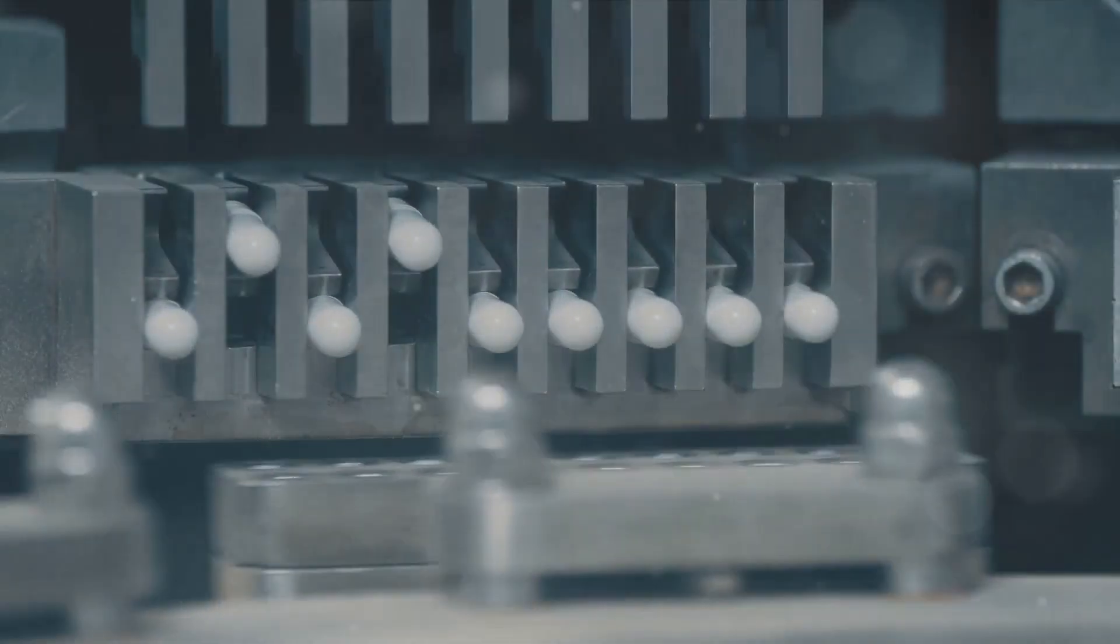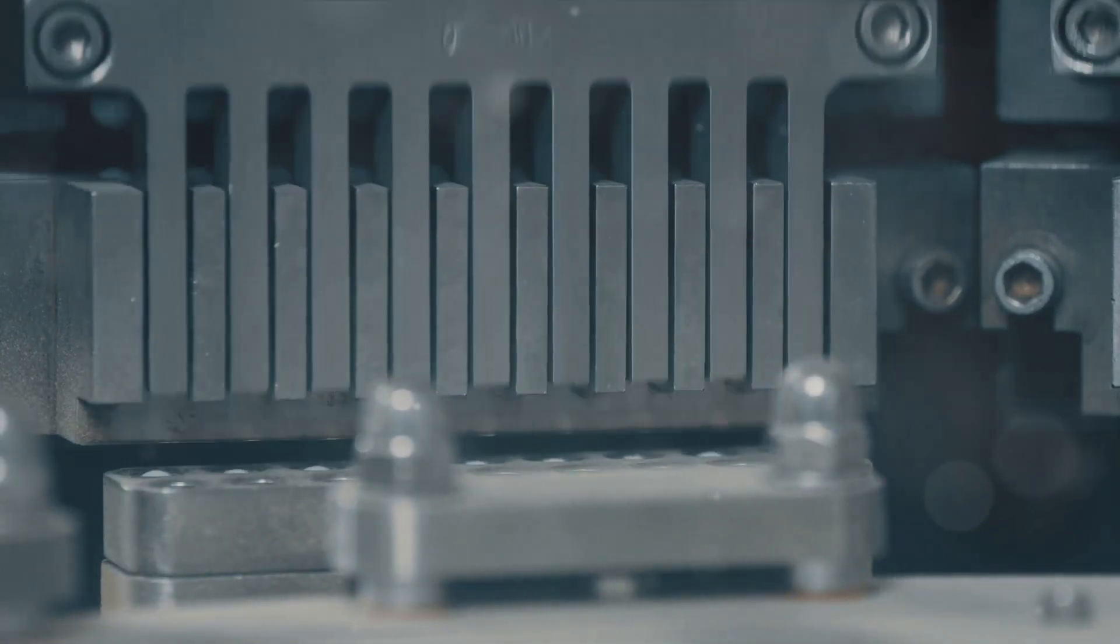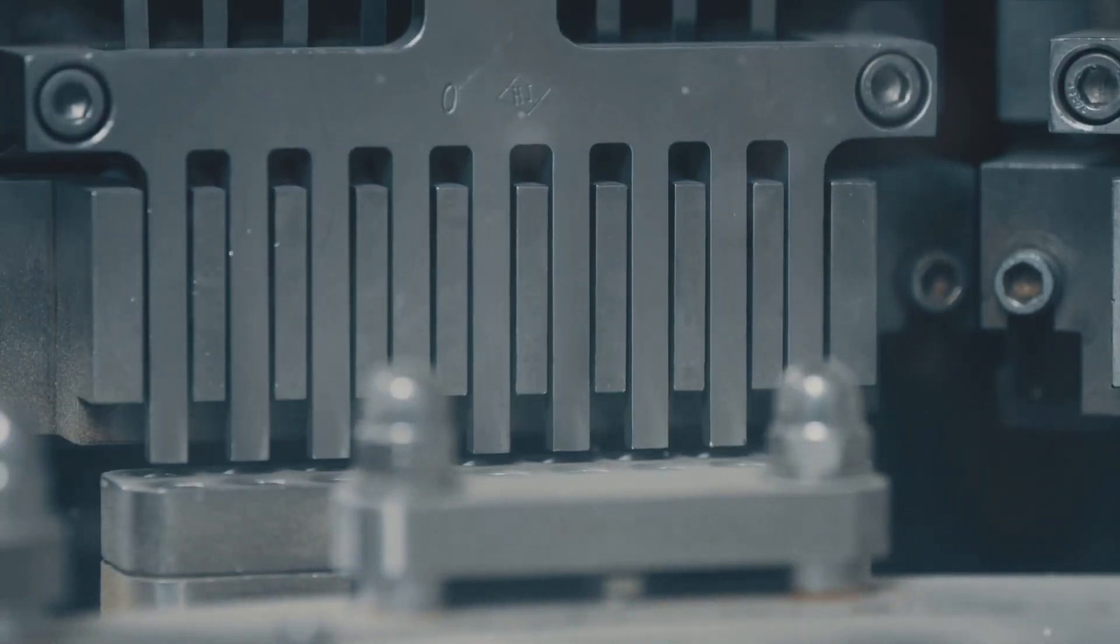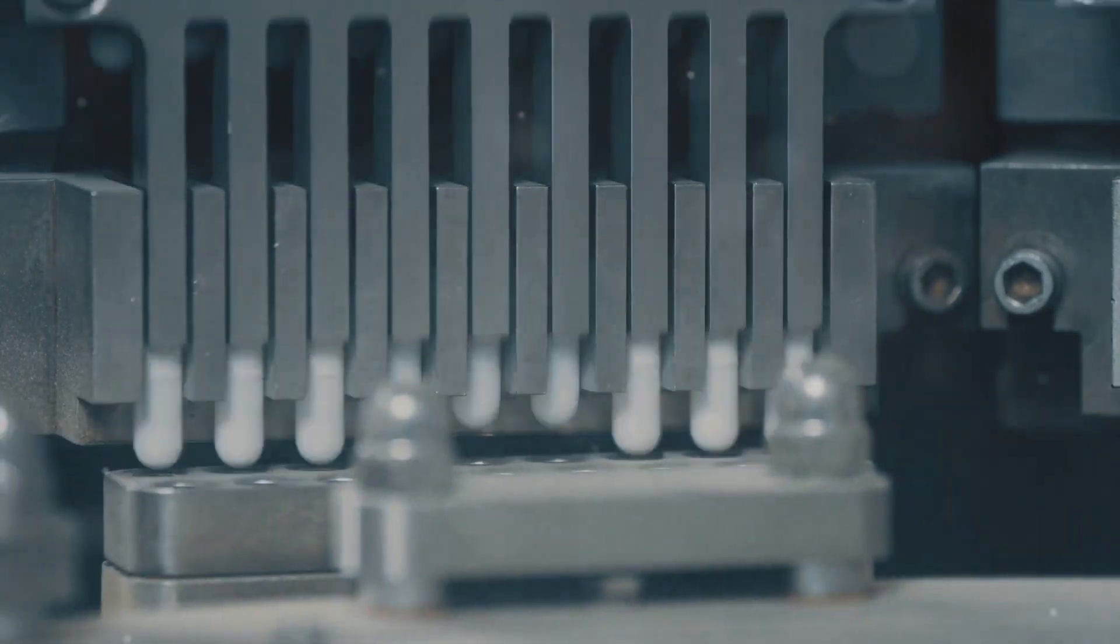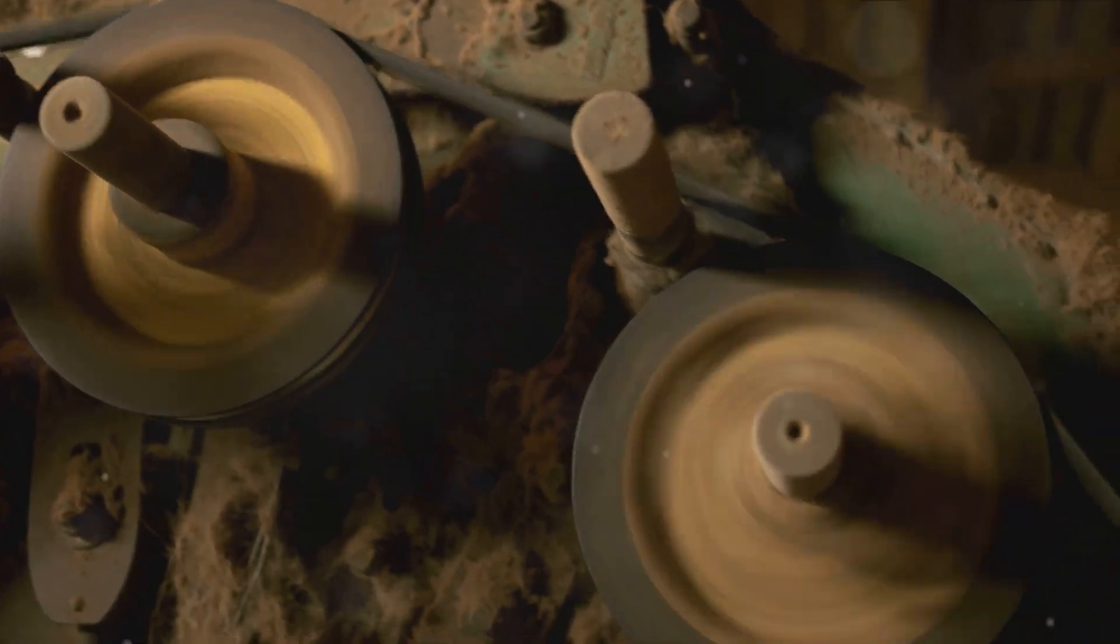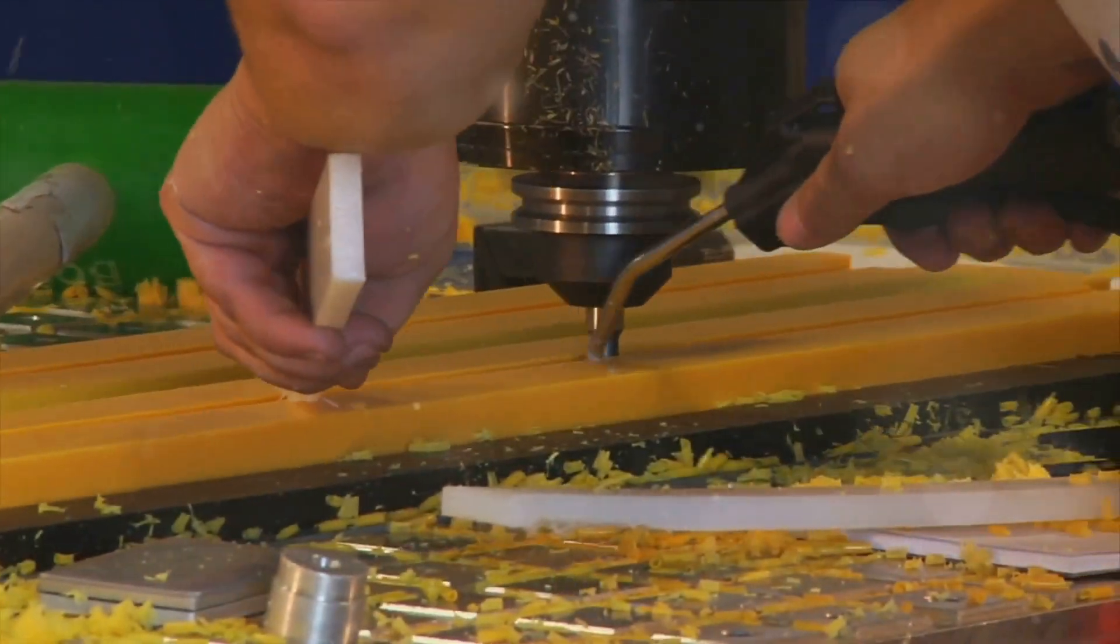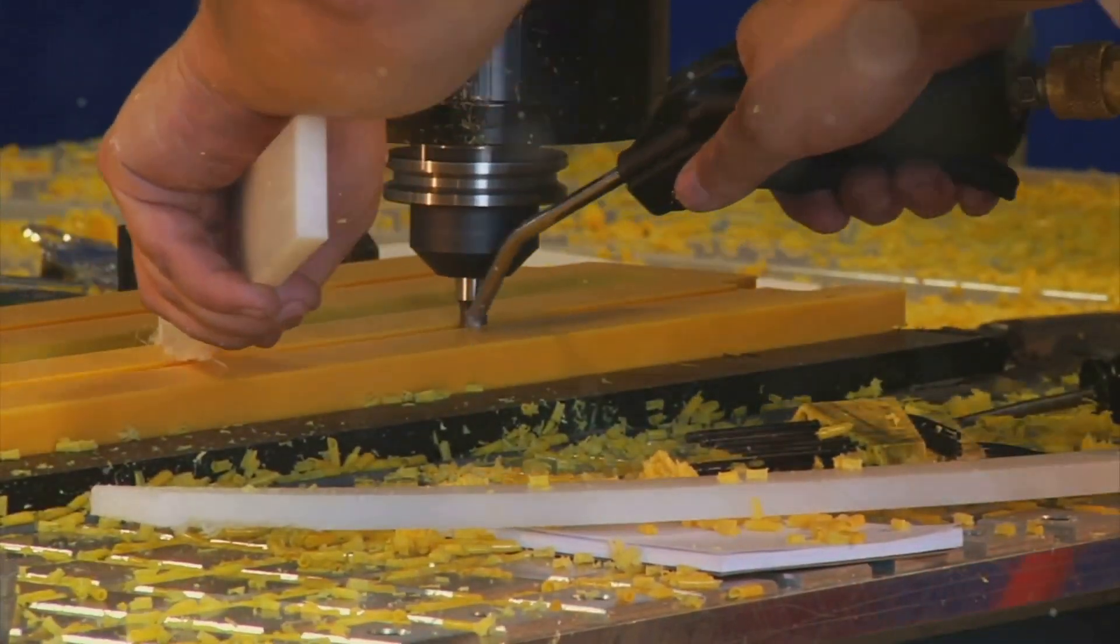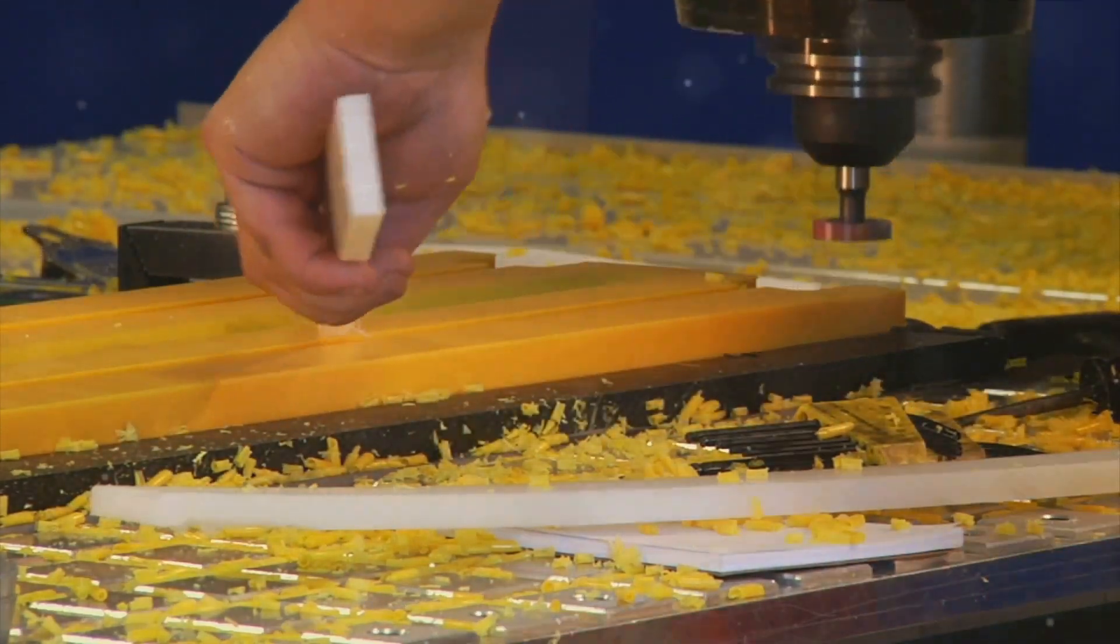Last but not least, we have the wadding machine, a key player in ensuring airtight seals. This unsung hero in the machinery's world is the last checkpoint before the product reaches your hands, making sure that what's inside stays inside. The wadding machine is a marvel of engineering. It operates with precision and efficiency, inserting a small piece of material known as a wad into each cap. This wad is what creates the airtight seal, preventing any leakage and keeping the contents of the container fresh and safe.